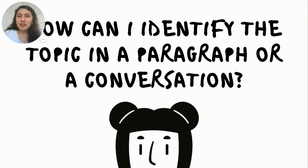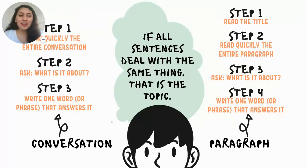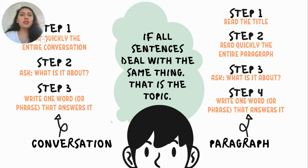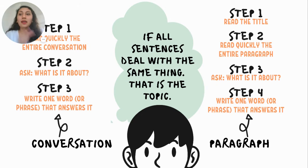How can we identify the topic in a paragraph or in a conversation? We have three steps. In a conversation: first, read quickly the entire conversation. Second, ask yourself: what is this about? Third, write one word or phrase that answers that question. Leer rápidamente, preguntar de qué se trata, y escribir una palabra que responda esa pregunta. Eso para la conversación.